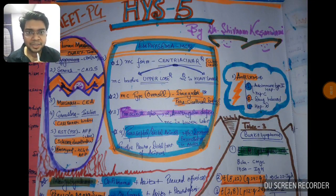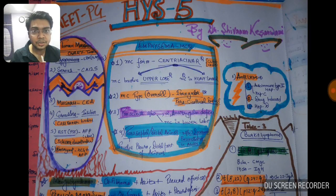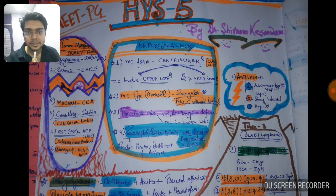This is Dr. Shivam Kesarwani saying hi to all of you. Let's start with high yielding stuff part 5. In this section you will find five tables, five important tables from which you can get around ten questions because every point is a repeat MCQ from NEET PG based questions. Stay focused.